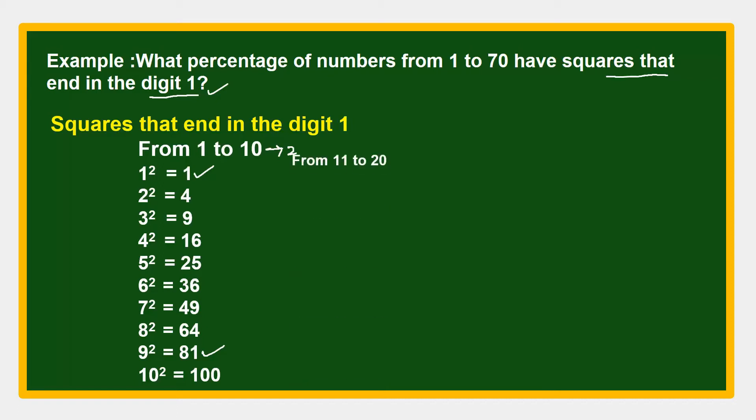Similarly, from 11 to 20 you'll get 2 only - 11 squared and 19 squared. 21 to 30 also you get 2: 21 squared and 29 squared. 31 to 40 also you get 2 numbers. 41 to 50, 51 to 60 also you get 2 numbers. Similarly, 61 to 70 also you get 2. So total: 2, 2, 2, 2, 2, 2 - that's 14.